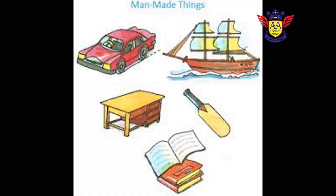Man-made things. Some things are made by human beings, they are called man-made things. Examples: chair, table, bottle, etc.